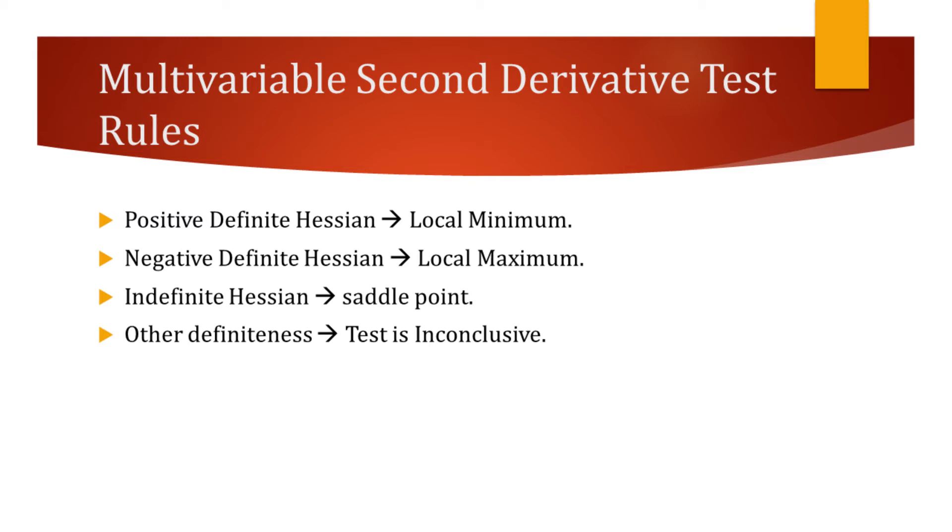Whenever every eigenvalue of the Hessian is negative at the critical point, meaning that Hessian is the negative definite matrix, the critical point is a local maximum.